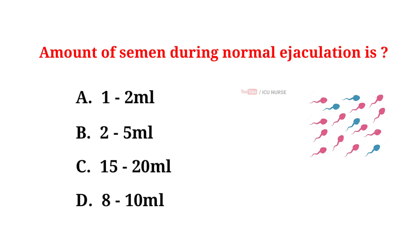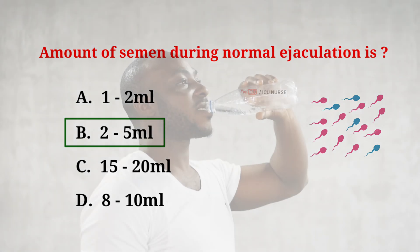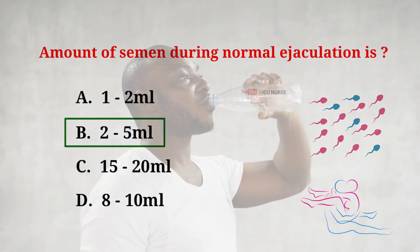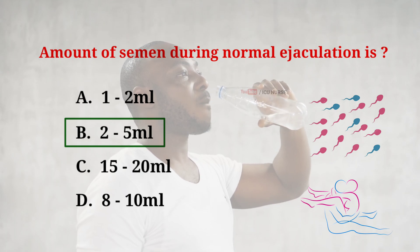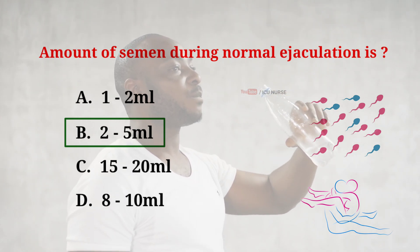Amount of semen during normal ejaculation is: A. 1-2 ml. B. 2-5 ml. C. 15-20 ml. D. 8-10 ml. The correct answer is B: 2-5 ml. Normal semen volume varies, but it is typically between 2-5 ml. This volume can change based on factors like hydration and sexual frequency. Adequate semen volume is essential for successful fertilization and reproduction.